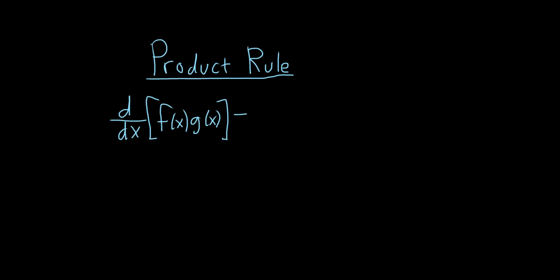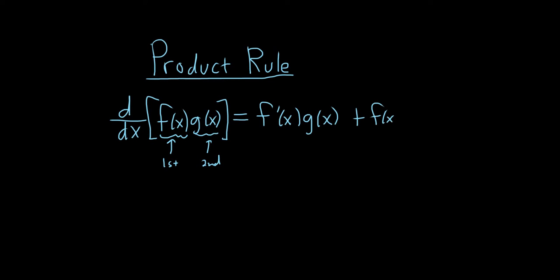The best way to memorize the Product Rule is to think of f(x) as the first piece and g(x) as the second piece. The Product Rule says it's the derivative of the first times the second, plus the first times the derivative of the second piece. So it's: derivative of the first times the second, plus the first times the derivative of the second.